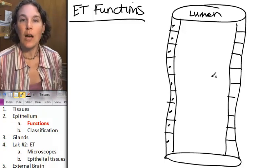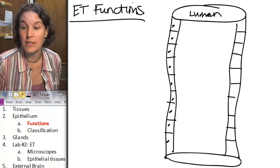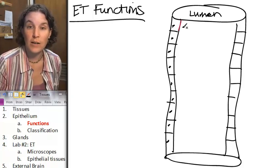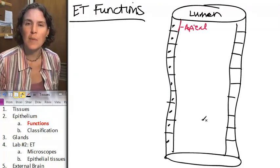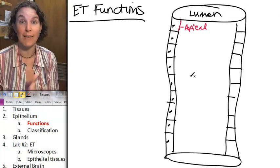All right. Tell me, where is the apical edge of the cell? Right here is the apical. That says apical because you remember that apical is the edge that lines the lumen.